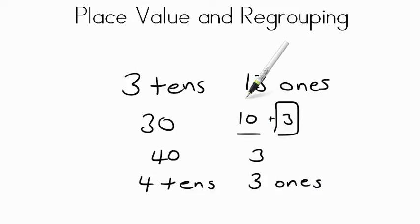Now 40 is the same as 4 tens and 3 is the same as 3 ones. So if we regrouped, we change that 10 over to this 10 here, that's our 4 tens and we have our 3 ones left over. We've regrouped. We've added the extra 10 back in there. Now is 3 tens and 13 ones the same as 4 tens and 3 ones? Well, yes it is.